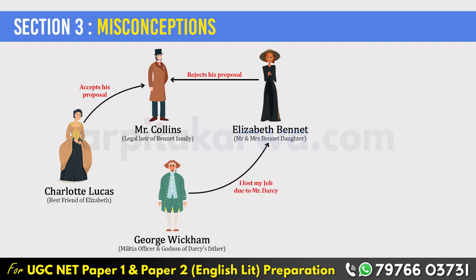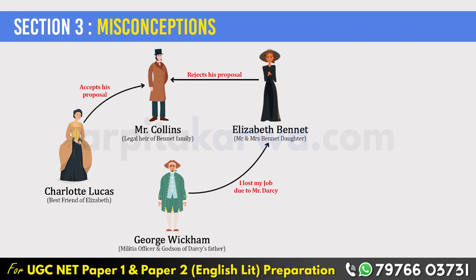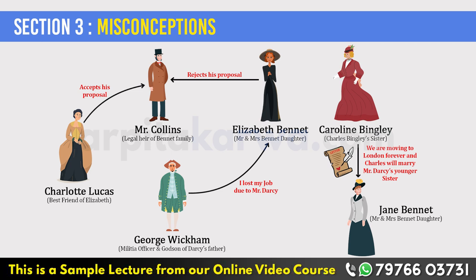A few days pass and a ball is hosted by Bingley in Netherfield. Everyone has a good time and it is expected that Jane might soon be engaged to Mr. Bingley. However, the next morning Jane receives a letter from Bingley's sister Caroline, stating that they are moving back to London forever and that Charles will get married to Mr. Darcy's younger sister Georgiana. Elizabeth assumes that Mr. Darcy must have provoked the Bingley family to take such steps, and she starts hating him even more.